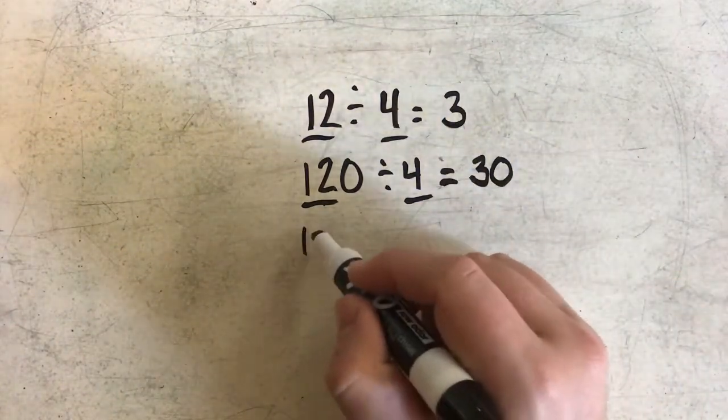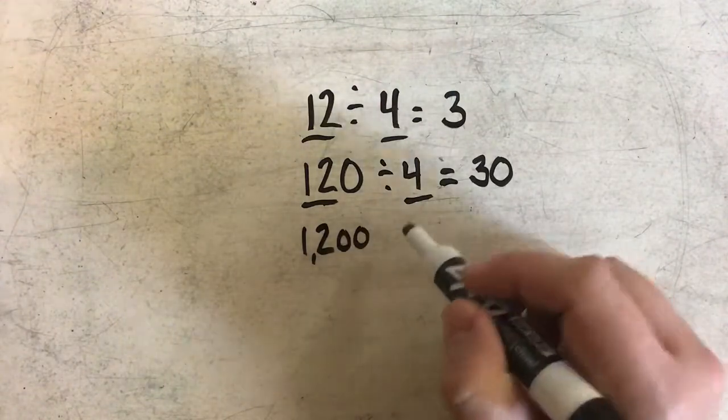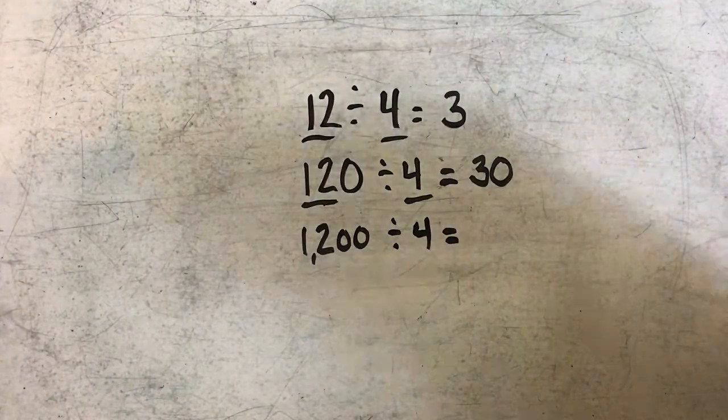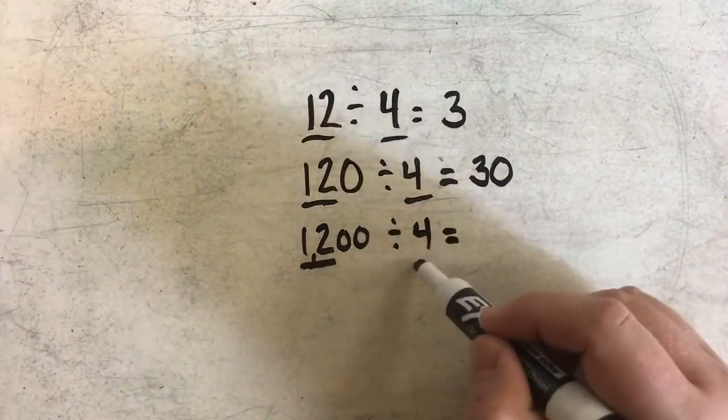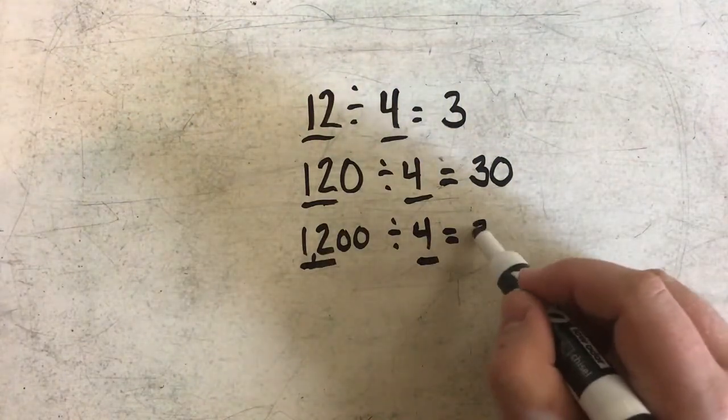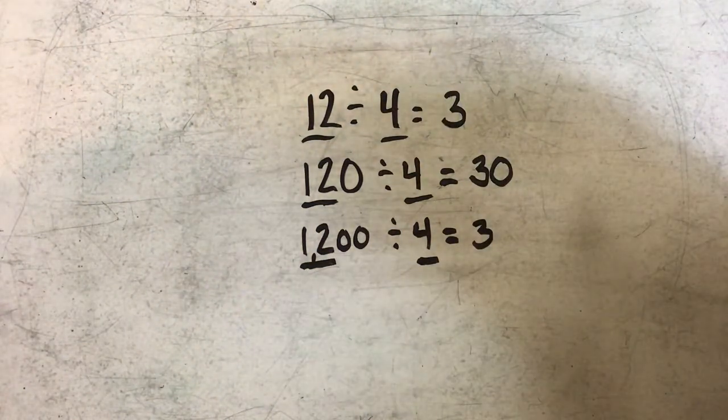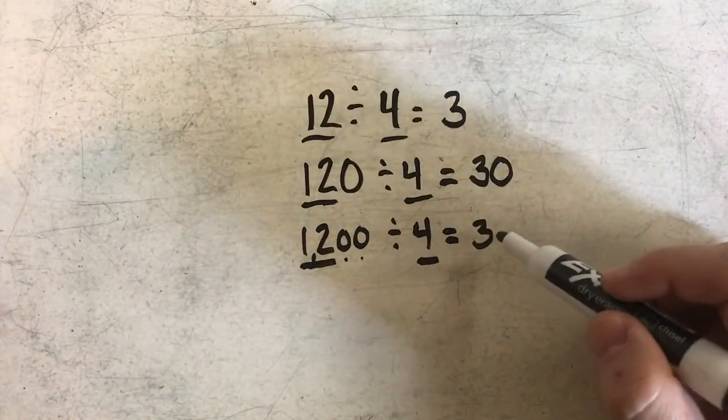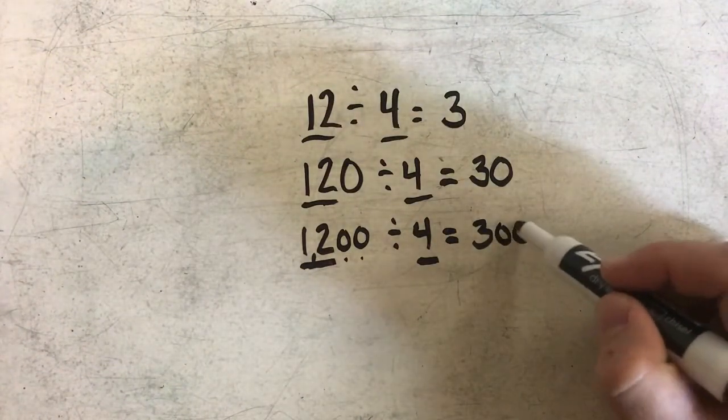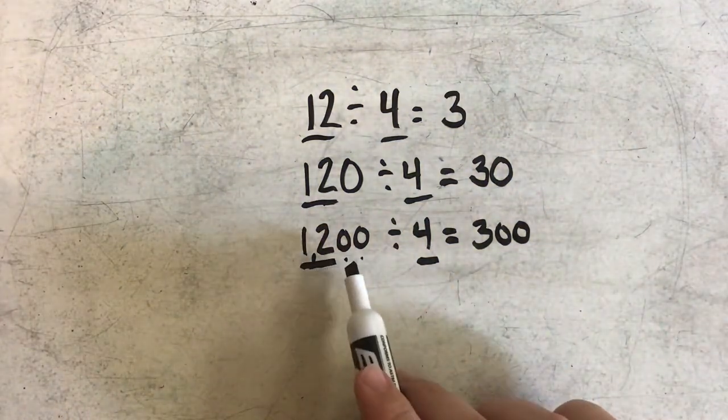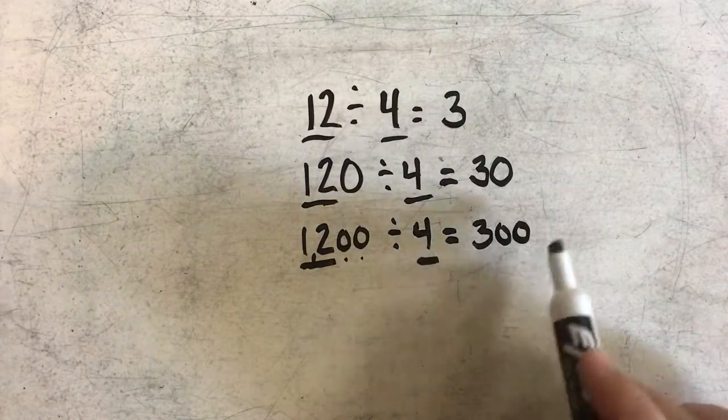I continue that pattern to 1,200 divided by 4. Again, I see the basic fact of 12 and 4. 12 divided by 4 is still 3. I'm going to include that in my answer, but now I have two zeros in my dividend, so I also need to include two zeros in my quotient. So 1,200 divided by 4 equals 300.